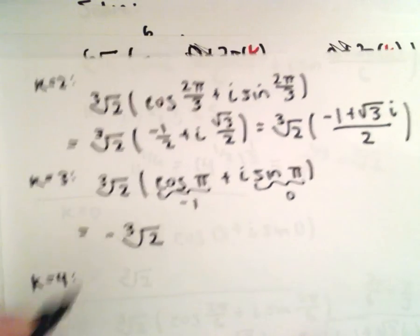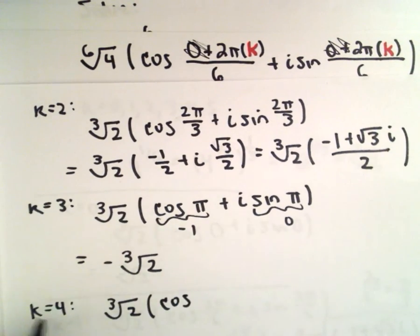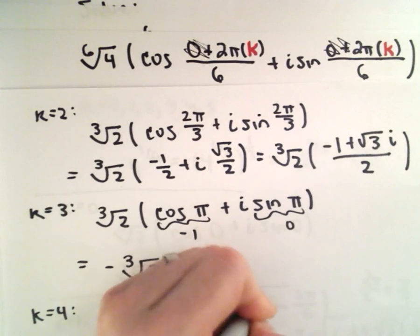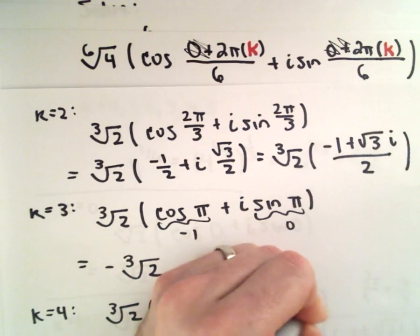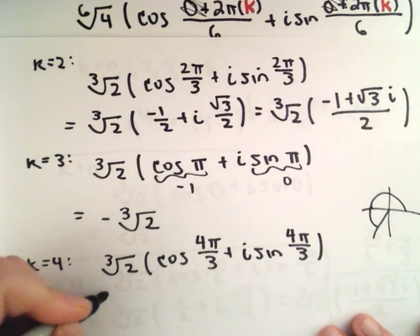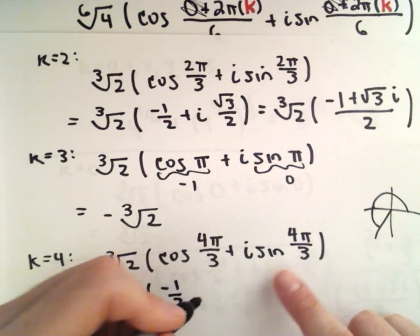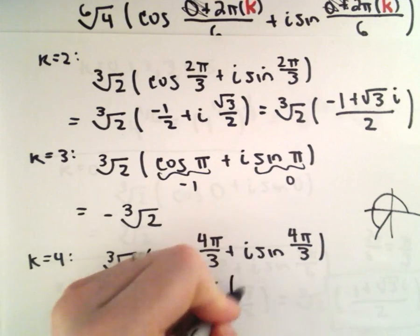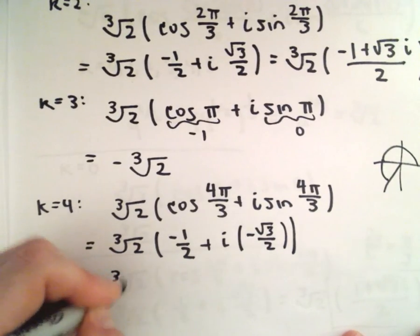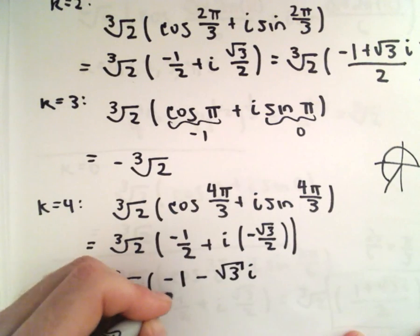For k equals 4, we have the cube root of 2 times cosine of 8 pi over 6, which reduces to 4 pi over 3, plus i times sine of 4 pi over 3. The angle 4 pi over 3 is in the third quadrant. Cosine of 4 pi over 3 is negative 1/2 and sine of 4 pi over 3 is negative root 3 over 2. So we can write this as the cube root of 2 times the quantity negative 1 minus the square root of 3 times i, all over 2.